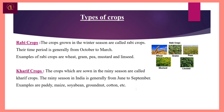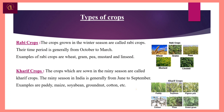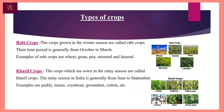Kharif crops are crops which are sown in the rainy season. The rainy season in India is generally from June to September. Some examples of Kharif crops are paddy, maize, soya bean, and groundnuts. I hope you liked this video.